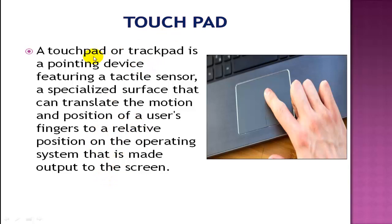Touchpad: A touchpad or trackpad is a pointing device featuring a tactile sensor — a specialized surface that can translate the motion and position of a user's fingers to a relative position on the operating system. A touchpad is a small flat surface with buttons around the edge. Moving the stylus or a finger on the pad moves the cursor. The buttons work like mouse buttons.